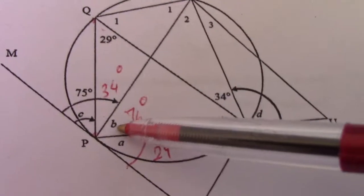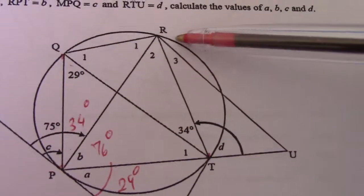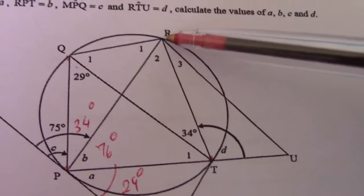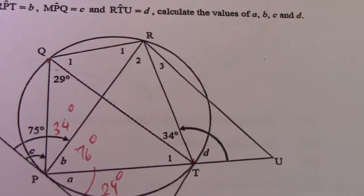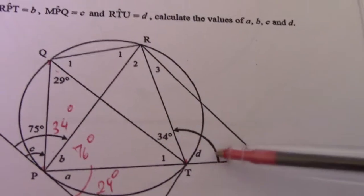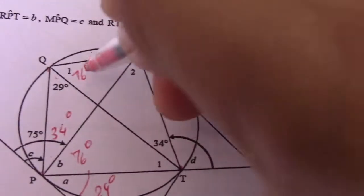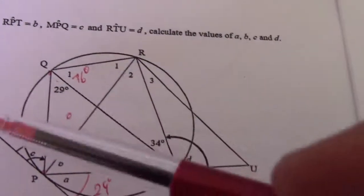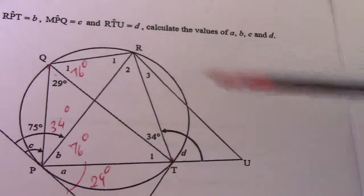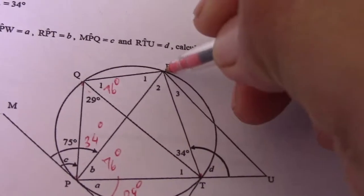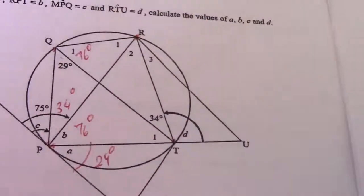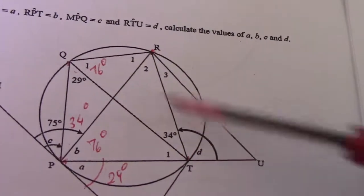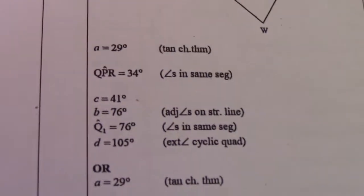And Q1 equals 76. So if this is 76, Q1 is also 76. They're both subtended by arc RT. So you see from chord RT, we form angle Q1 and we form angle P. Therefore, they're both 76. And T there, outside, exterior angle of a triangle. So if that is 76, 76 plus 29 gives me 105. So angle T equals 105, exterior angle of a cyclic quadrilateral. So how do I know it's a cyclic quad? There's Q, there's R, there's T, there's P. So I have four points that are touching the circumference of the circle. Therefore, that is a cyclic quad. And T equals 29 plus 76, which equals 105 degrees, exterior angle of a cyclic quad.